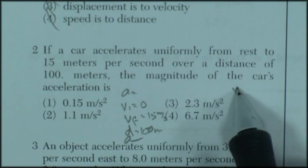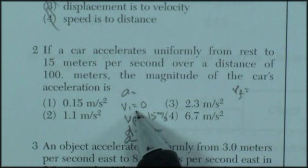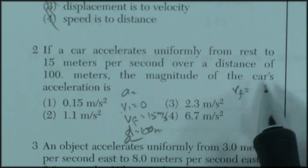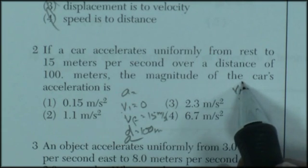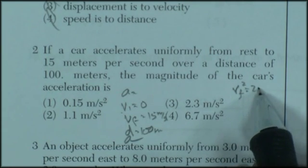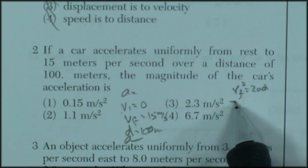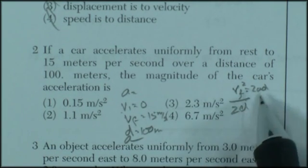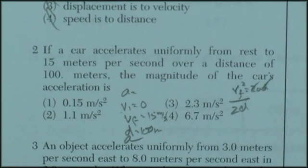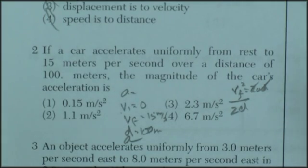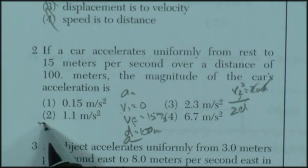So velocity final squared equals, well, velocity initial is zero, so I'm just going to get rid of it. Velocity final squared equals 2AD. And so I'm looking for acceleration. So velocity final squared divided by 2D will give me my acceleration. And according to my calculator, this is the correct answer.